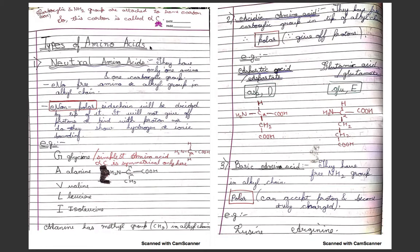Neutral amino acids have only one amino and one carboxyl group. No free amino or carboxyl group is present in their alkyl chain. Examples are glycine, alanine, valine, leucine, and isoleucine, which can be remembered by GAVLI. Glycine is the simplest amino acid present, and here the alpha carbon is symmetrical - only here will you find a symmetrical alpha carbon. In glycine, the alkyl group has only one hydrogen, so it is the simplest.